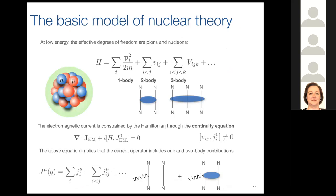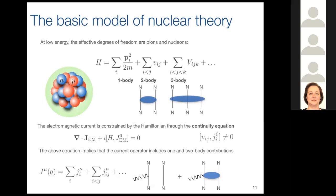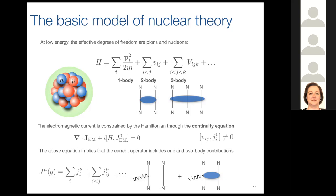We describe our nucleus as a collection of neutrons and protons — the effective degrees of freedom — that interact through the exchange of pions. The Hamiltonian describing the interaction between protons and neutrons is given by the kinetic energy plus two-body and three-body interactions. Once we fix the Hamiltonian, the electromagnetic current is obtained by requiring it satisfies the continuity equation. As soon as we introduce a two-body interaction into the Hamiltonian, we also need to introduce a two-body current whose structure is consistent with the two-body interaction used in the Hamiltonian.